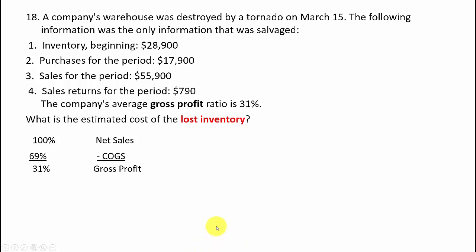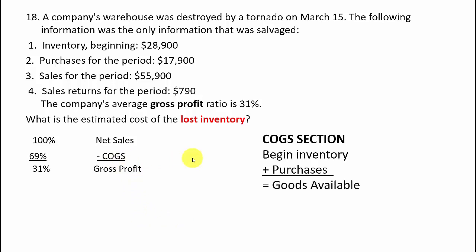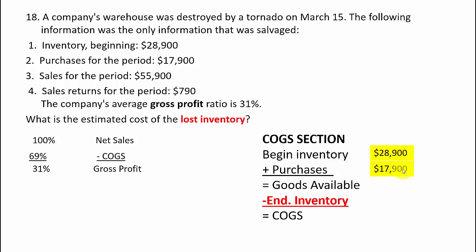We're looking for ending inventory or lost inventory. We'll set up a cost of goods sold section: beginning inventory plus purchases equals goods available, minus ending inventory equals cost of goods sold. Beginning inventory was $28,900 and purchases were $17,900, so goods available equals $46,800.